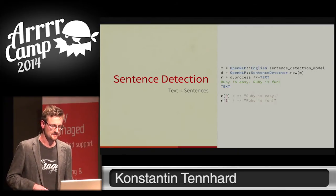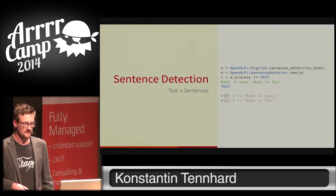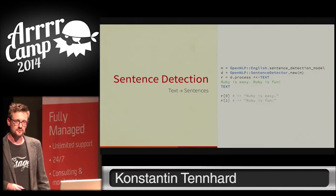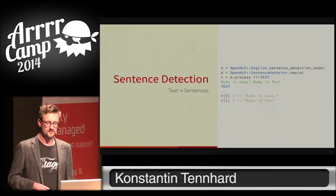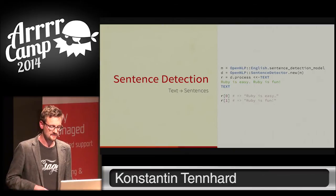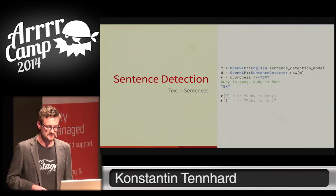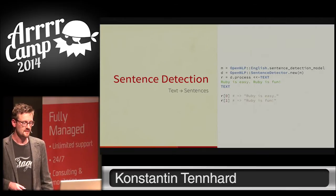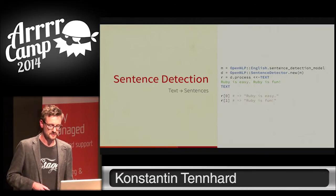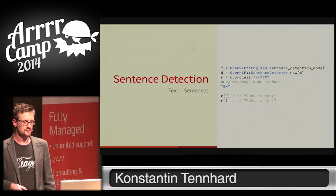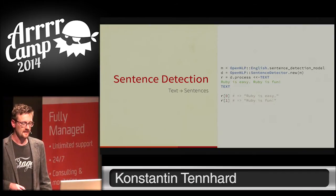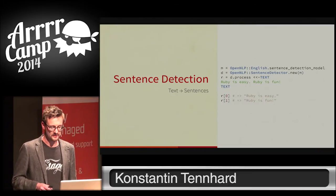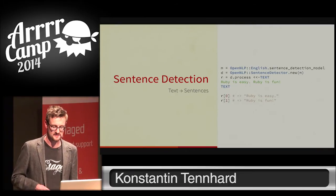There are essentially three steps. In the first line, we load the sentence detection model for the English language. Then we initialize the sentence detector. And in the third line, we call the process method with a string. As a result, we get back a Ruby array where each item is a single sentence.